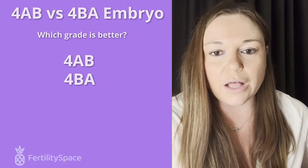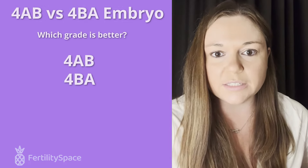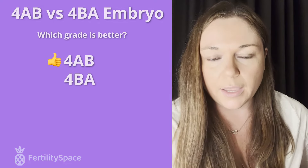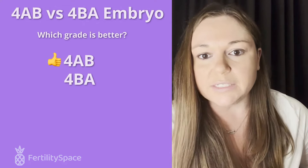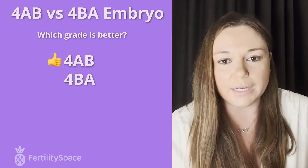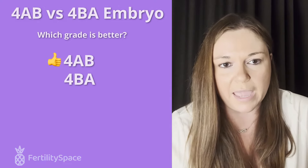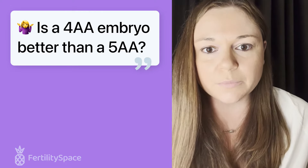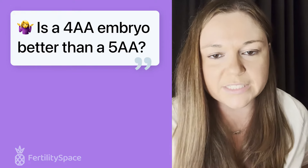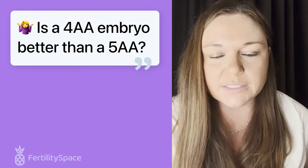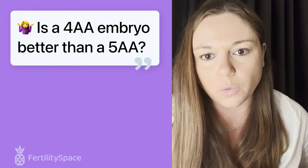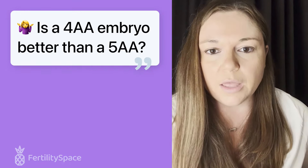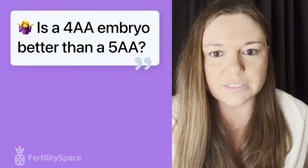One thing to keep in mind is that many clinics say AB grades are better than BA grades. Statistically there's a slight increase with an AB grade versus a BA grade, meaning the inner cell mass is better, and those show a slightly higher implantation rate. So if you have a 4AB and a 4BA frozen, most clinics will elect to transfer the AB before the BA. Is a 4AA grade better than a 5AA? There's actually no real statistical difference between the two. However, if embryos aren't tested, the clinic will choose the embryo further along in development, though both are good choices for transfer with very little statistical difference.